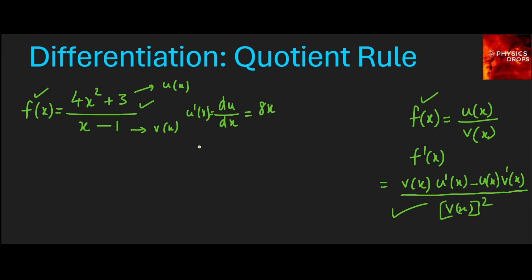Then let's differentiate the denominator, which is the differentiation of v(x), that is dv/dx. It's just 1, because the constant −1 becomes 0 and the differentiation of x with respect to x is 1.